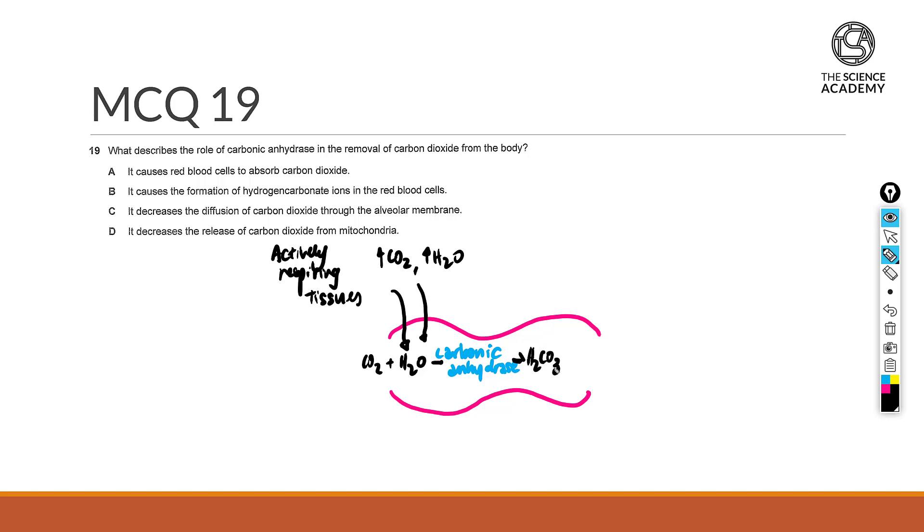H2CO3 will then spontaneously break down to form H+ ions together with hydrogen carbonate ions. Only hydrogen carbonate ions will diffuse into the blood plasma. An important point to remember is that protons or H+ cannot diffuse out because they're acidic and enzymes might get denatured. The transportation of hydrogen carbonate will be going together with the red blood cells back into the lungs.